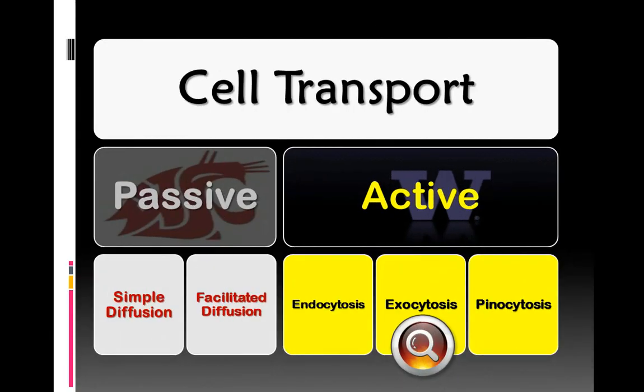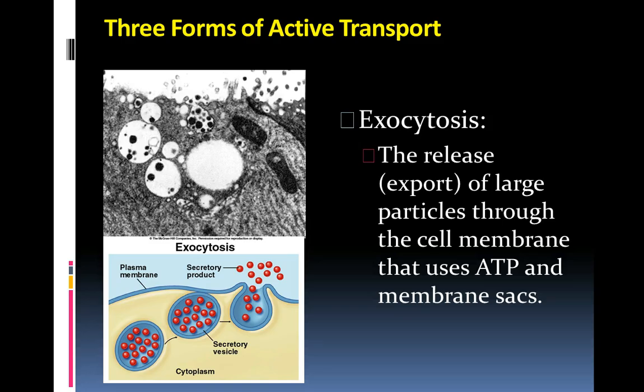Exocytosis is the opposite of endocytosis, where it's the release or the export of large particles through the cell membrane. And this requires the use of ATP in membrane sacs. So you can see in this lower picture, we have this vesicle or this sort of fat droplet, if you will. And it has some product on the inside. And it will actually move toward the cell membrane and it will actually fuse. And as it does so, these membranes sort of connect and then a hole is produced. And then that allows for the red particles to be released to the outside of the cell.